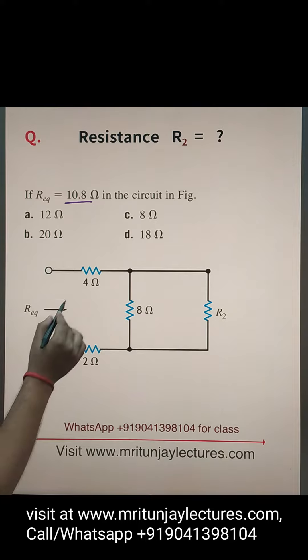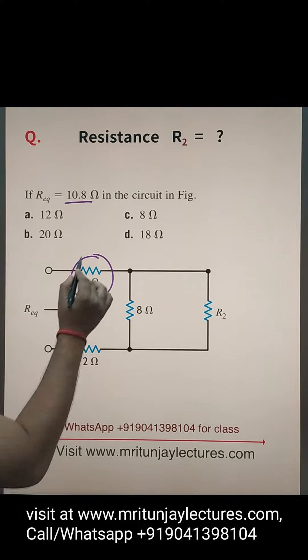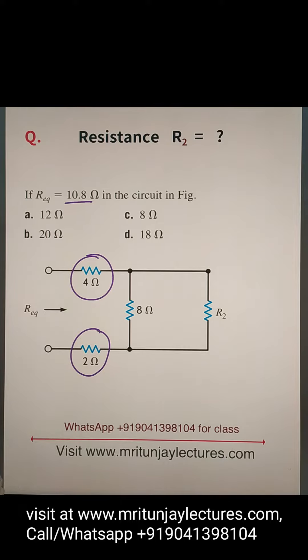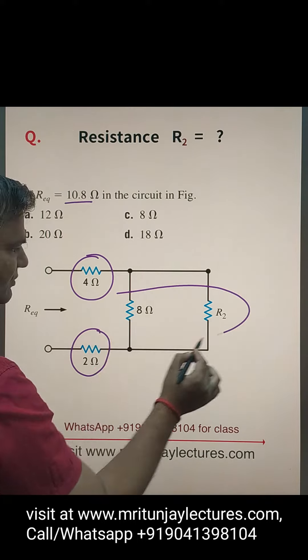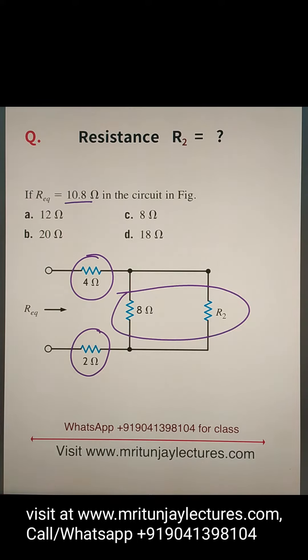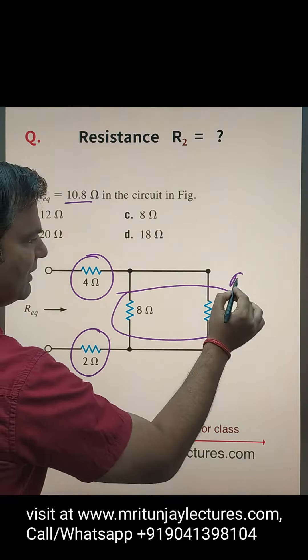Now look. 4, sorry 2 in series and combination of these two. These two are parallel. So suppose that is R.